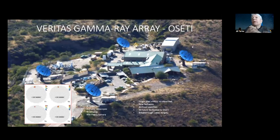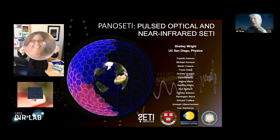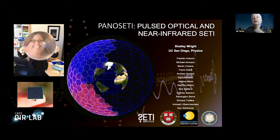We've taken the VERITAS Gamma Ray Observatory and written new software to look at individual pixels in the 500-pixel cameras of these telescopes, which light up on the sky simultaneously. In the optical, Shelly Wright in San Diego is looking at half-meter Fresnel lenses focusing a large area of the sky onto an array of detectors.